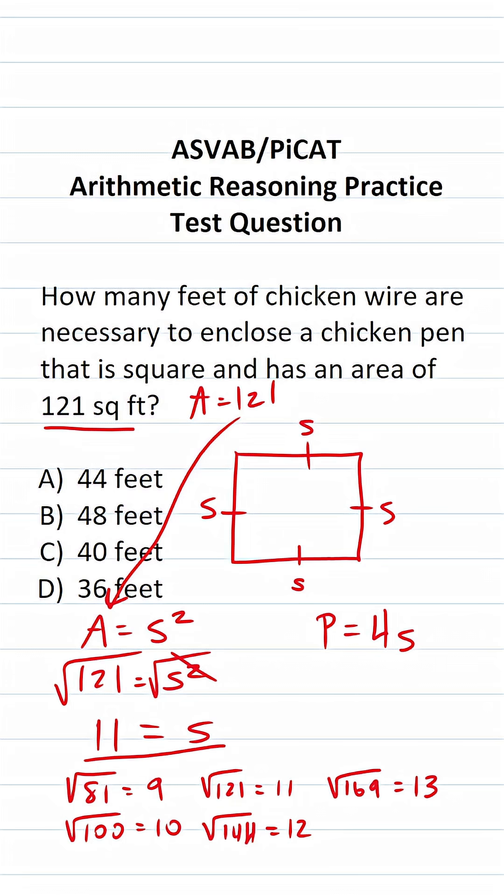So now that we know our side length is 11, we can find our perimeter pretty easily. We'll plug in 11 for S here. This says perimeter equals 4 times 11. 4 times 11 is 44. So in other words, we're going to need 44 feet of chicken wire to enclose this chicken pen. So the answer is A.